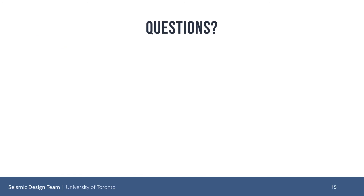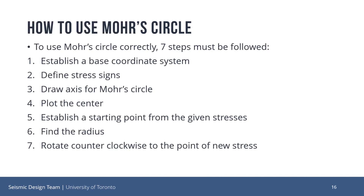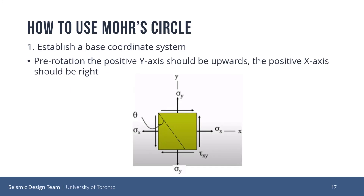Does anyone have any questions about how we got Mohr's Circle from the derivations from stress transformations? To use Mohr's Circle, seven steps must be followed. First, we must establish our base coordinate system. Then we must define our stress signs. Then draw our axes for Mohr's Circle. Then plot the center of the circle. Then establish a starting point from the given stresses. Then find the circle's radius. Then rotate counterclockwise to the point of new stress that we wish to find. Establishing a base coordinate system is simple: we just use positive y upwards and positive x to the right. Our rotation axes orientation will depend on the rotation angle.